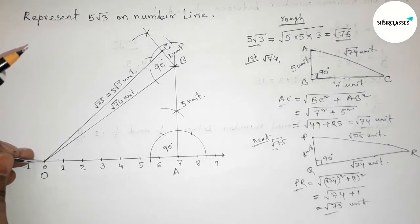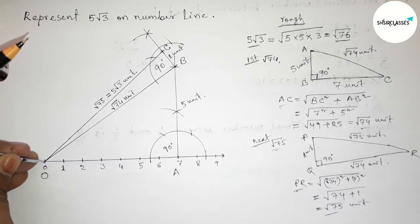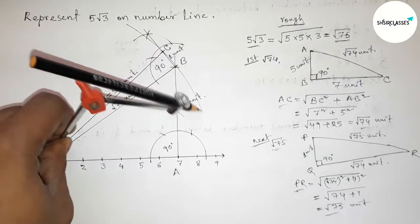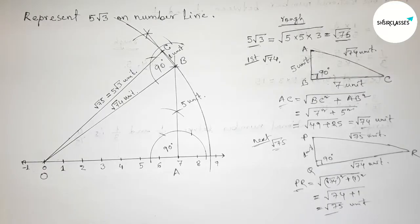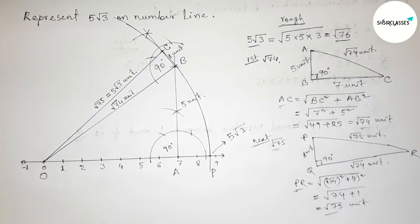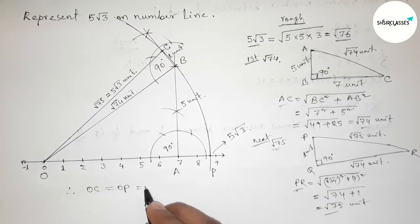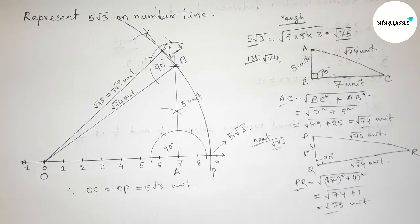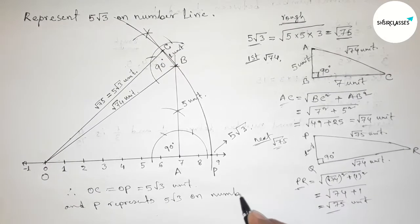Now taking the length OC with the compass and drawing an arc from C that meets the number line at a point P. Therefore OC = OP = 5√3 units, and the point P represents 5√3 on the number line.